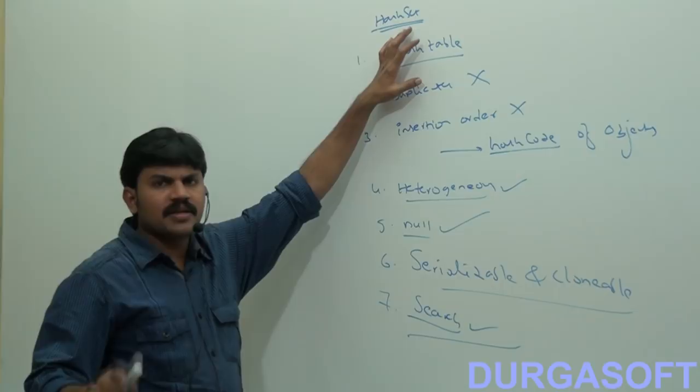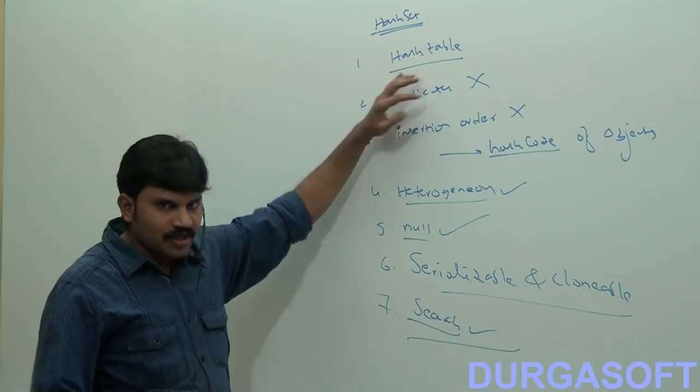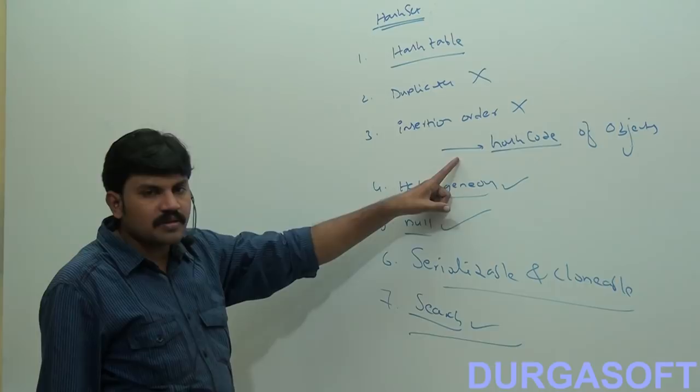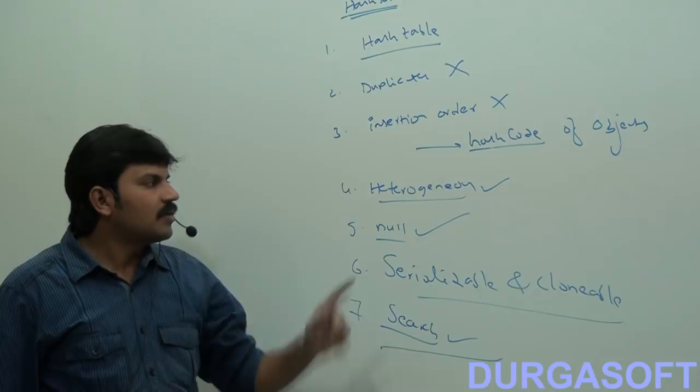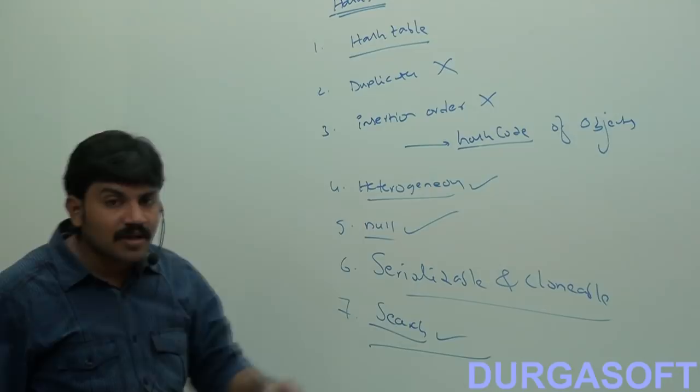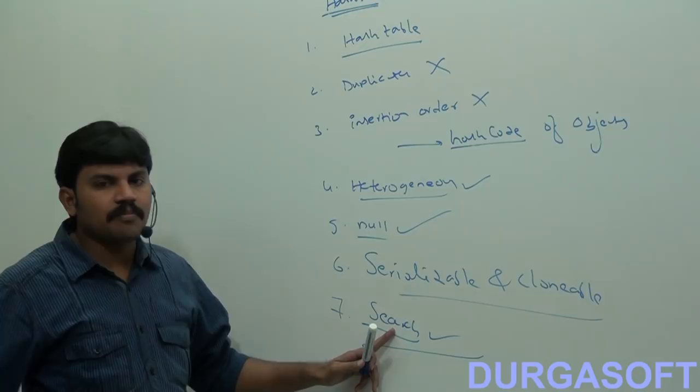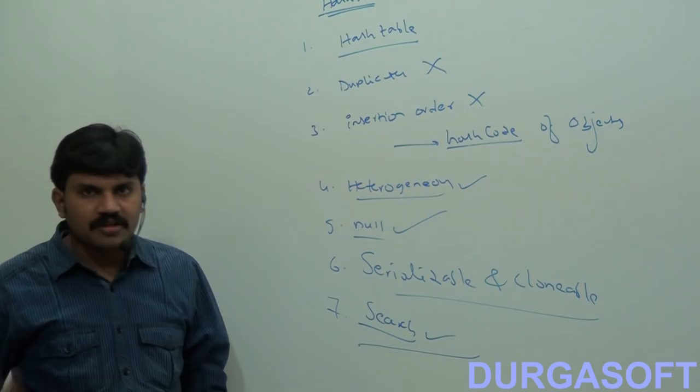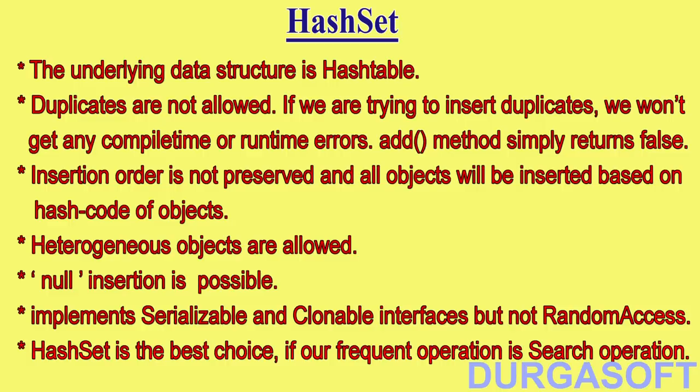To summarize HashSet: underlying data structure is Hash Table, duplicates are not allowed, if you try to insert a duplicate no compile-time error or runtime exception occurs, insertion order is not preserved and is based on hash code of objects, heterogeneous objects are allowed, null insertion is possible, and HashSet implements Serializable and Cloneable but not random access.